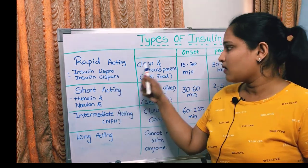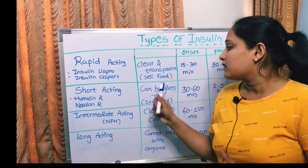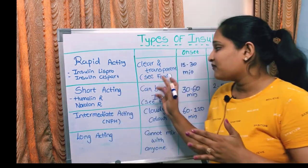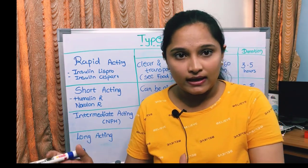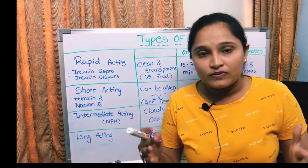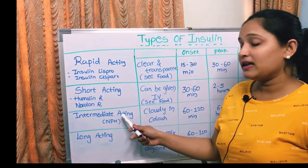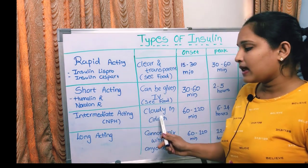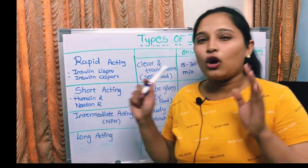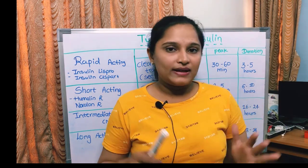Rapid acting insulins are clear and transparent in color. Short acting insulin can be given IV. Both rapid and short acting insulins are 'see-food' insulins — once you see the food is ready, only then give the insulin, and immediately have the patient eat, because their effects come in a very short time and the patient will have a hypoglycemic reaction quickly. Intermediate acting NPH insulins are cloudy in color. Long acting insulin cannot be mixed with any other insulin. The only insulin that can be given IV is regular insulin, and only in emergency conditions such as diabetic ketoacidosis.